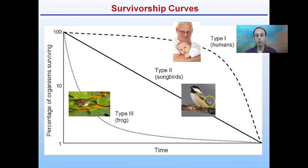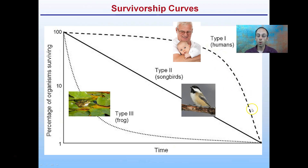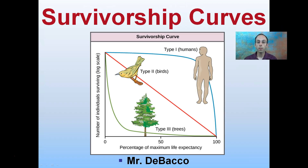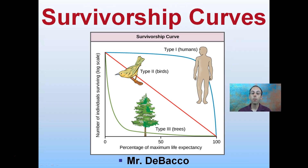Type 2 is that consistent or linear decrease. Type 1, humans, shows a kind of plateau — you're very likely to survive to mid-to-older age, and once you reach that point, the survivorship curve declines rapidly toward the end. Hopefully that gives you a quick explanation of the three survivorship curves, their types, how they look graphically, and a description of each.